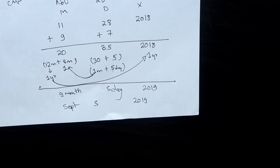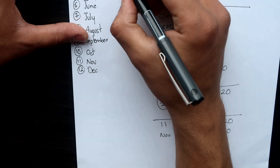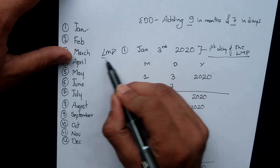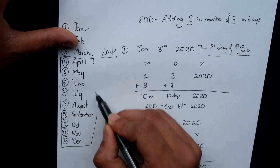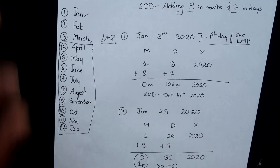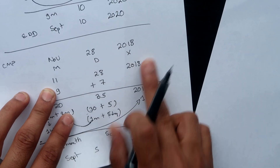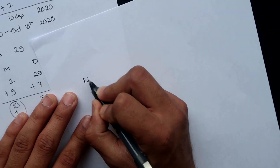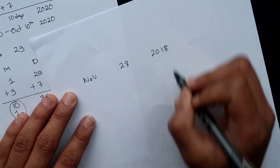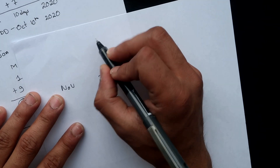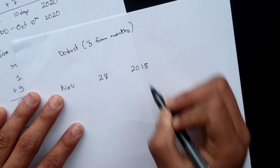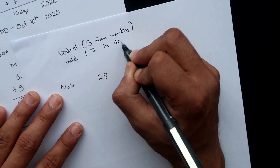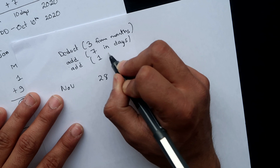There is also another technique for calculating the estimated date of delivery. If your LMP — last menstrual period — is later than March, meaning if your LMP falls between April and December, you can calculate it in a very easy way. In this method, you deduct three from the month, add seven to the day, and add one to the year.